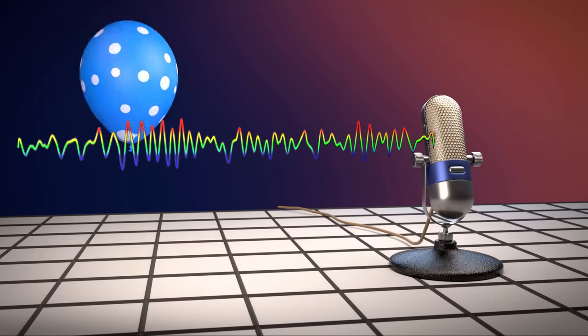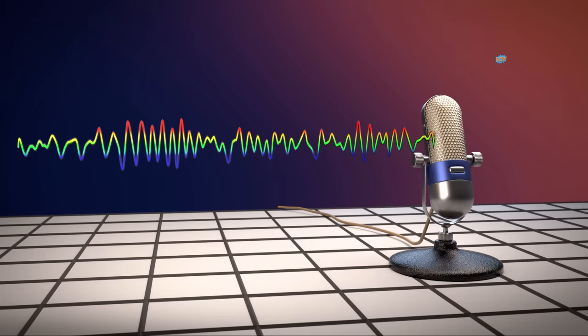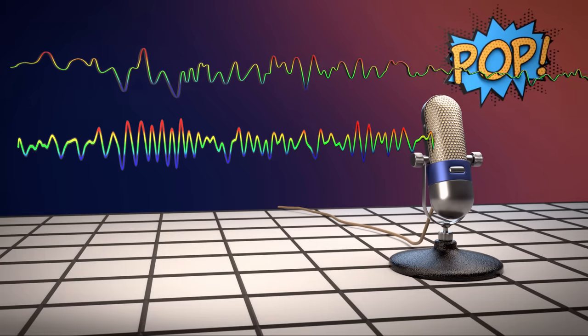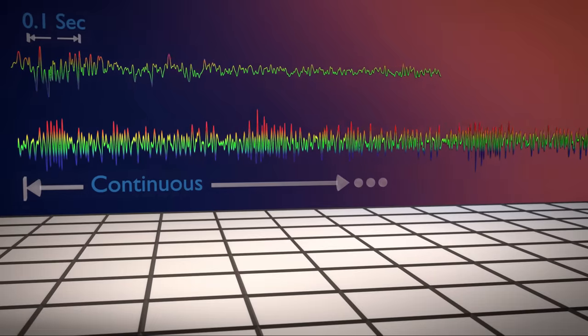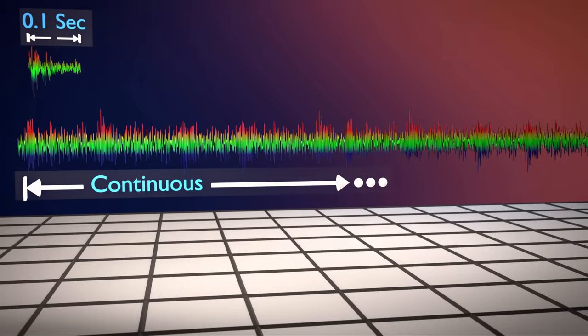The difference between the balloon popping and the running faucet is the way the air particles are moved, which can be seen in the shape of the waveform. Another difference is that the sound of running water is continuous, whereas the balloon popping only lasted a tenth of a second.